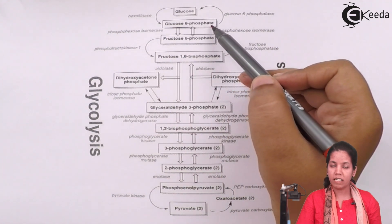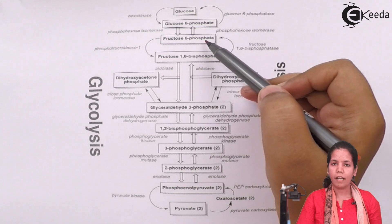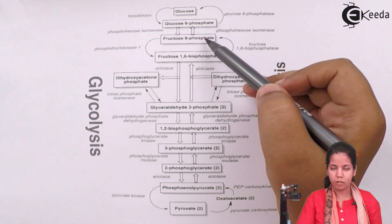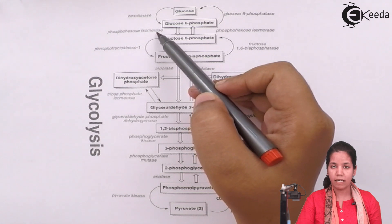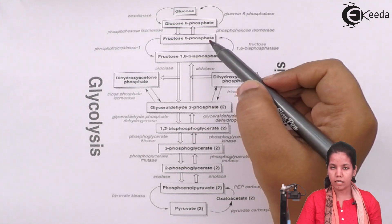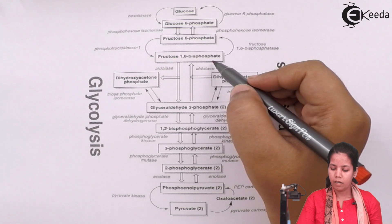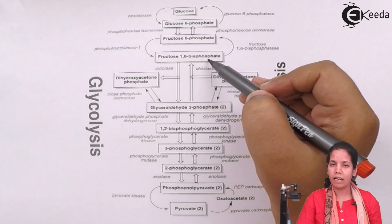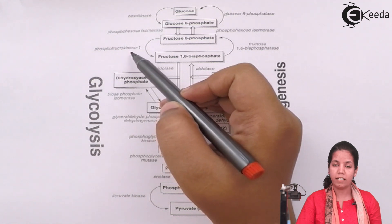Once glucose-6-phosphate is formed, the next intermediate product is fructose-6-phosphate. Since glucose and fructose are both isomers, the enzyme used is phosphohexose isomerase — isomerase is used whenever isomers are involved. Once fructose-6-phosphate is formed, the next intermediate product is fructose-1,6-bisphosphate. The difference is the addition of one phosphate molecule, so the enzyme used is phosphofructokinase — 'kinase' indicating the addition of phosphate.